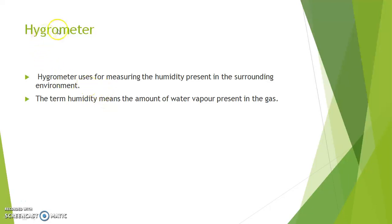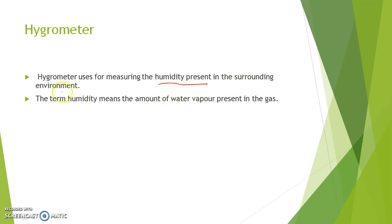Hello friends, in this video I am going to discuss about the hygrometer. This is a very important sensor. So what does the hygrometer do? A hygrometer is used for measuring the humidity present in the surrounding environment — that means in air or somewhere if you want to measure the humidity, we use this hygrometer sensor.